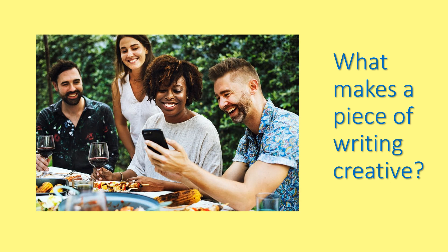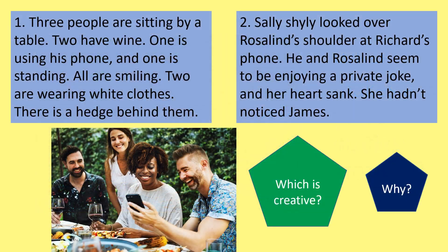So we've seen how to put a surprise in a story. How else can we make a piece of writing creative? Here is a picture of four people. One of these pieces of writing in the blue rectangles is creative and one isn't — can you guess which is which? Piece one: three people are sitting by a table, two have wine, one is using his phone and one is standing, all are smiling, two are wearing white clothes, there is a hedge behind them. Piece two: Sally shyly looked over Rosalind's shoulder at Richard's phone. He and Rosalind seemed to be enjoying a private joke, and her heart sank. She hadn't noticed James.